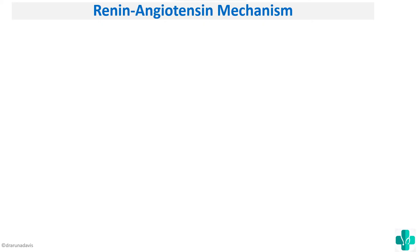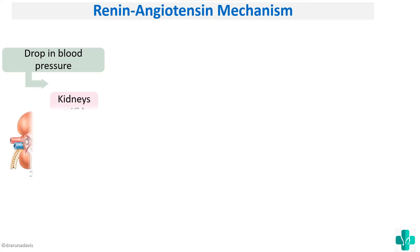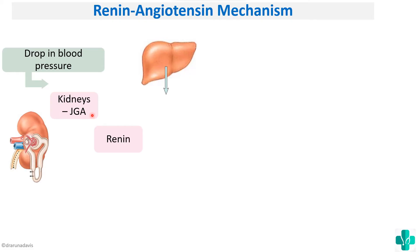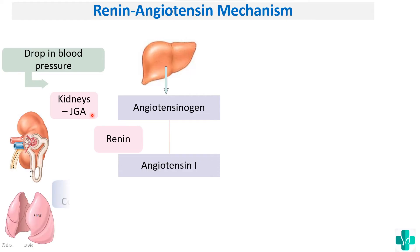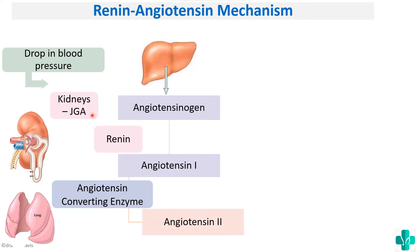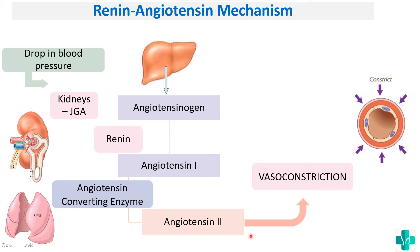For the renin-angiotensin mechanism, if there is a drop in blood pressure, it will be detected by the juxtaglomerular apparatus of the kidneys, which will produce renin. Renin converts angiotensinogen — produced by the liver — to angiotensin 1. The lungs produce angiotensin converting enzyme, which converts angiotensin 1 to angiotensin 2, causing intense vasoconstriction to bring BP back to normal.